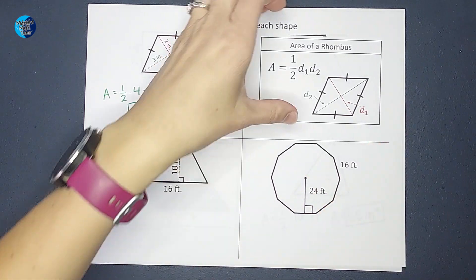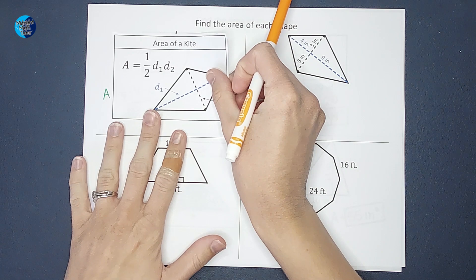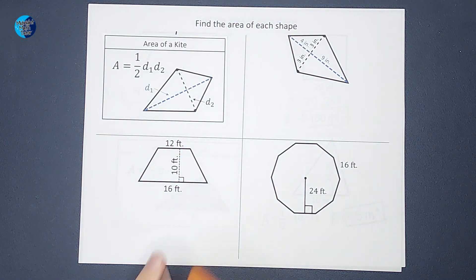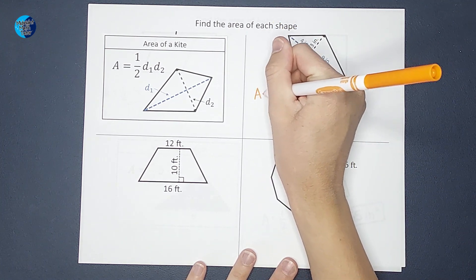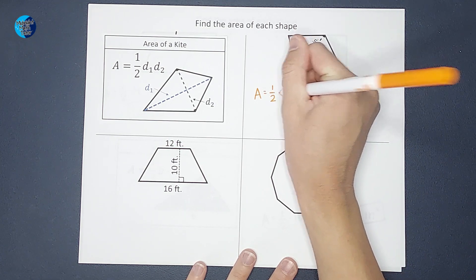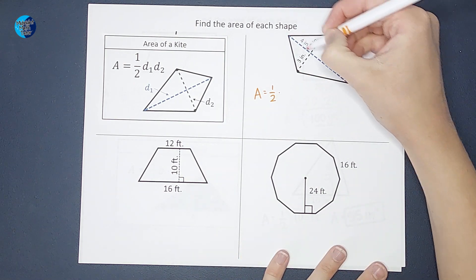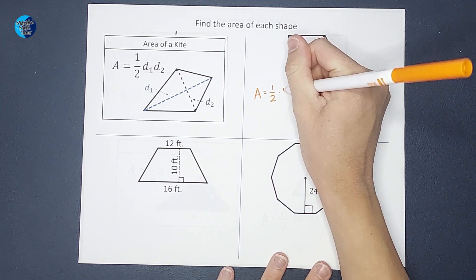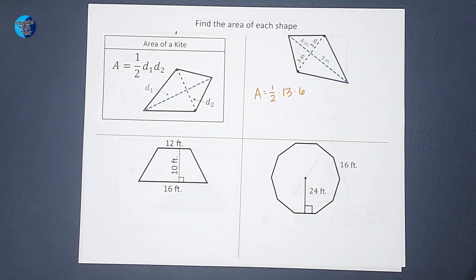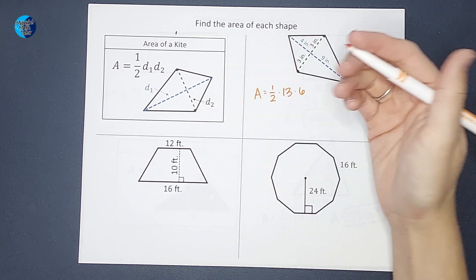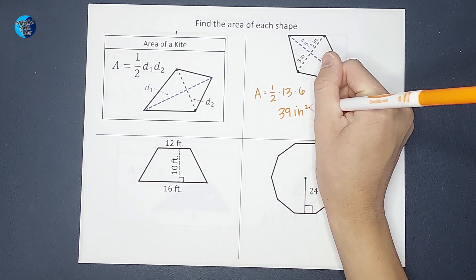Next we have the area of a kite, which is actually the same formula as a rhombus: one-half times diagonal one times diagonal two. The area is one-half times diagonal one — four plus nine gives me 13 — times diagonal two — three plus three gives me six. One-half times six gives me three, and 13 times three gives me 39 inches squared.